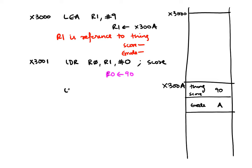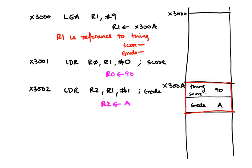At x3002, doing LDR R2, R1, #1 uses offset 1 to refer to the grade attribute — R2 gets the ASCII value for the letter A. The point of using a base register as our reference is that once I set the base I can get to any attribute. This thing is no longer just a number; the thing is all of this put together — not one attribute but multiple attributes. This thing can get as big as you want.